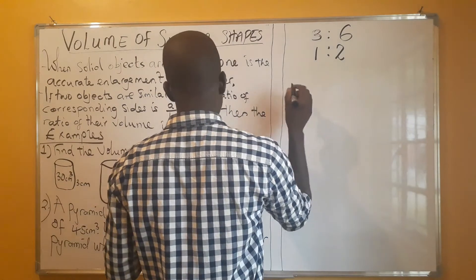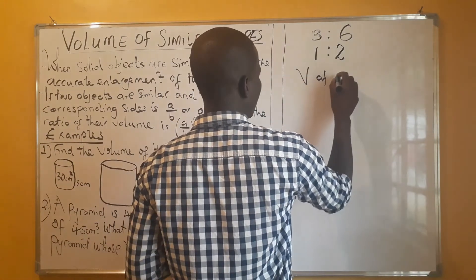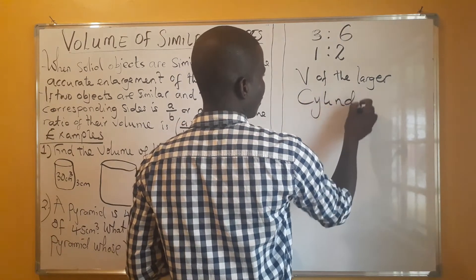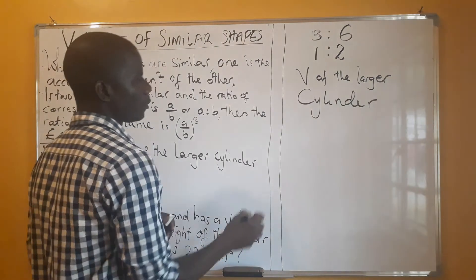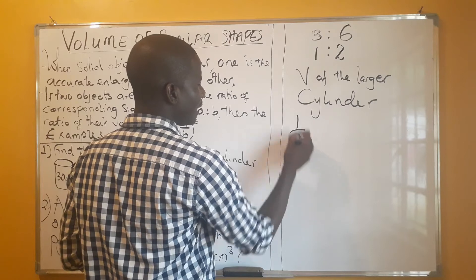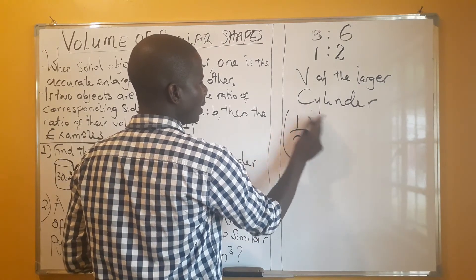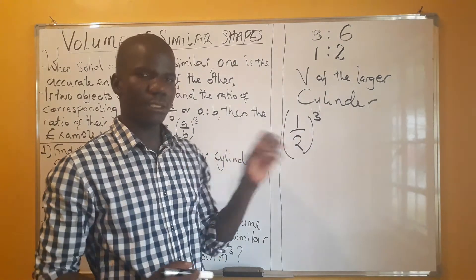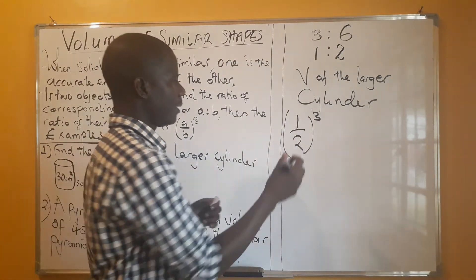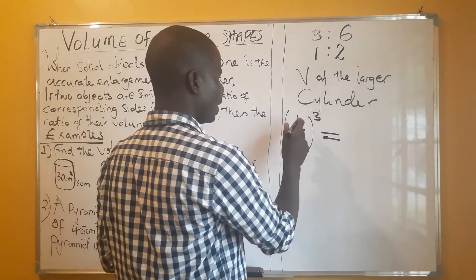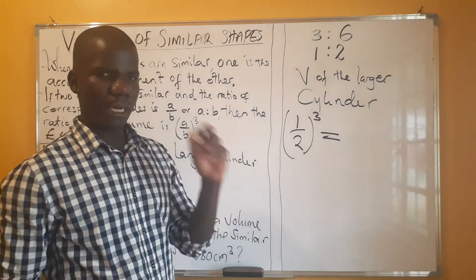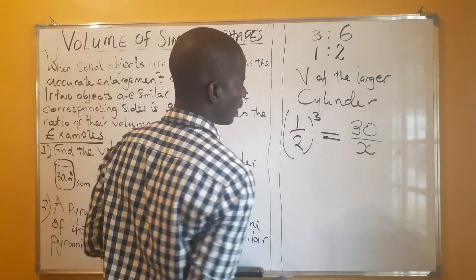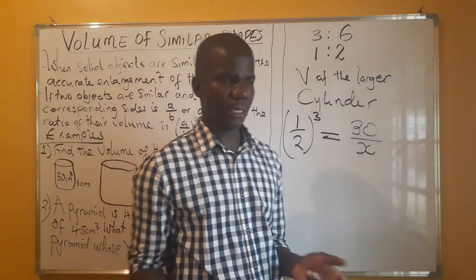We are finding the volume of the larger cylinder. We change the side ratios into ratios of volume by cubing them. The ratio of the smaller cylinder corresponds to 30 cm³, and the volume of the larger cylinder we call x. We set up the proportion accordingly.